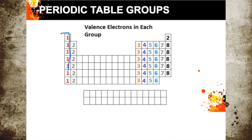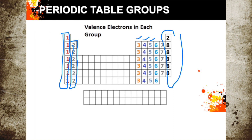Group 1A will have one valence electron. Group 2A will have two valence electrons. Group 3A will have three, and so on and so forth. Group 8A will have eight valence electrons, except for helium, which has only two. That means your inert gases or noble gases have completed all the shells, full with the required eight electrons on the outermost. The entire periodic table is arranged according to the number of valence electrons, so that elements in each group will react similarly and have similar properties.